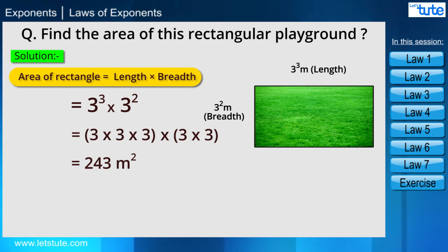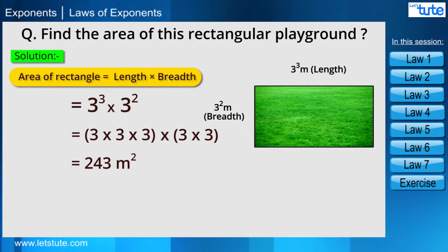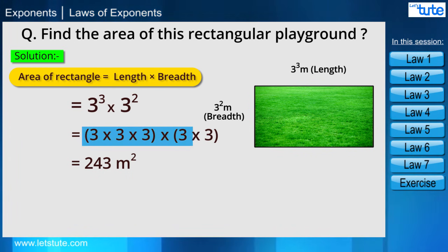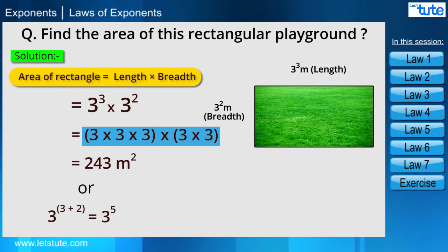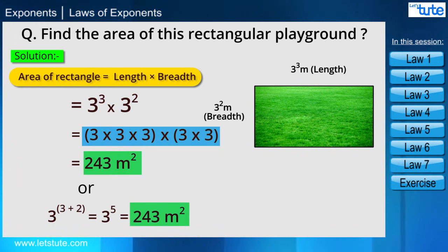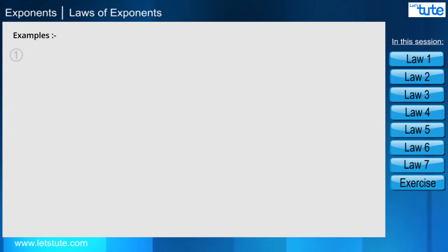Did you notice anything common here? Yes — the base is common, that is 3. That means 3 is multiplied 5 times altogether. Therefore we can write this as 3 raised to the power 5.